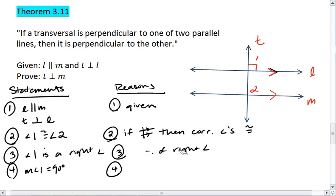Oh, I'm sorry. Statement 3 is not definition of right angle. 3 is definition of perpendicular lines. For statement 4, because angle 1 is a right angle, I know its measure is 90 degrees, and that's the definition of a right angle.